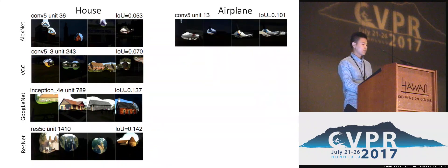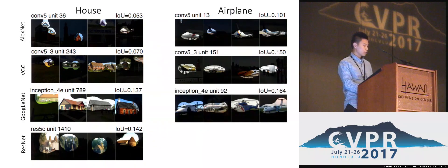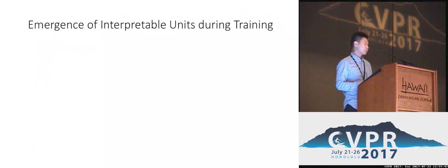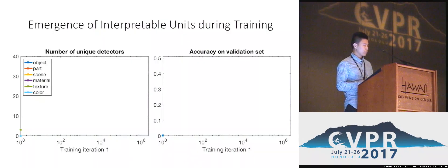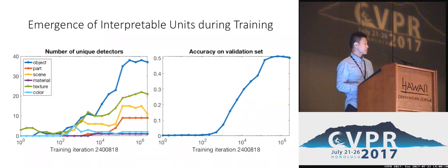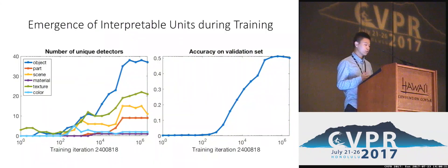The airplane detector in ResNet can handle changes in scale and even some occlusion cases. We can also apply network dissection to analyze interesting phenomena inside networks. For instance, we apply it to analyze the emergence of interpretable units during training. As training iterations progress, more unique detectors emerge, going along with increasing accuracy on the validation set. Therefore, network dissection provides a tool to help debug the training process.